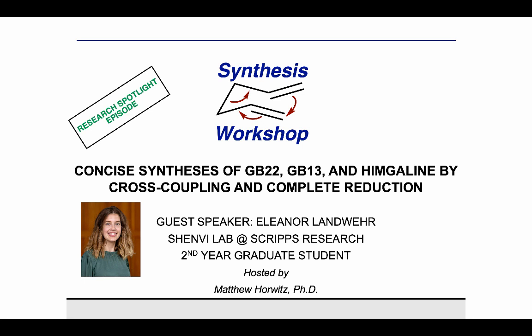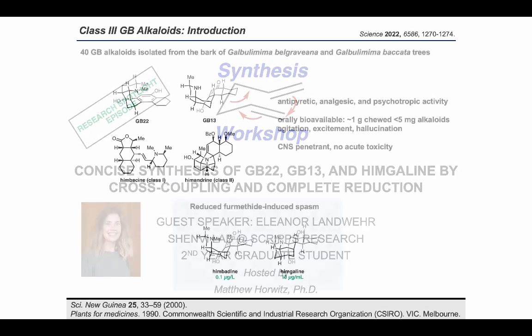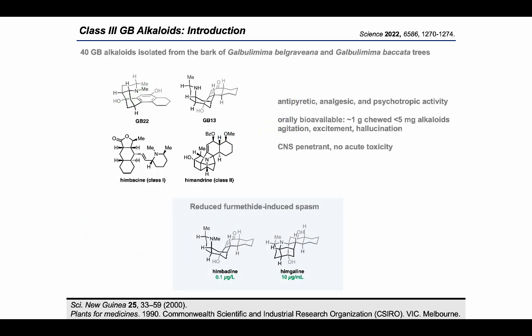Thanks for the intro, and thank you for having me today on Synthesis Workshop. I'm super excited to be discussing the concise syntheses of GB-22, GB-13, and hymgaline by cross coupling and complete reduction. Forty GB alkaloids have been isolated from the bark of GB trees in the rainforests of northern Australia and New Guinea. These alkaloids are divided into four classes based on their connectivity, and the ones we'll be discussing today are all members of class 3. The GB alkaloids have interesting bioactivity—historically, GB bark has been ingested by people indigenous to these areas for its antipyretic, analgesic, and psychotropic activity. GB alkaloids are able to penetrate the central nervous system with no acute toxicity.